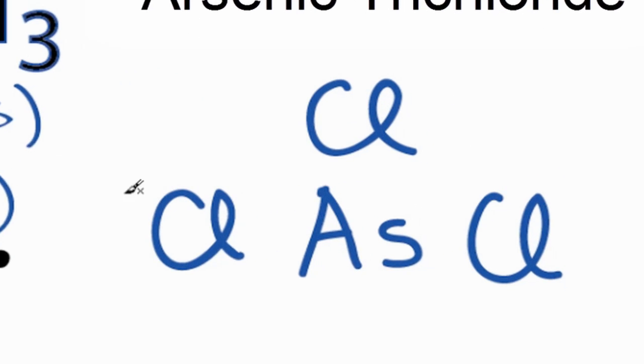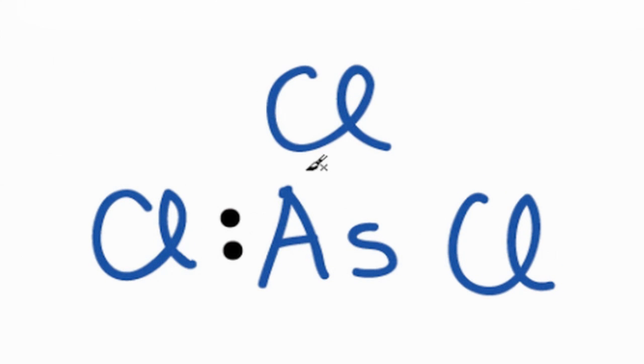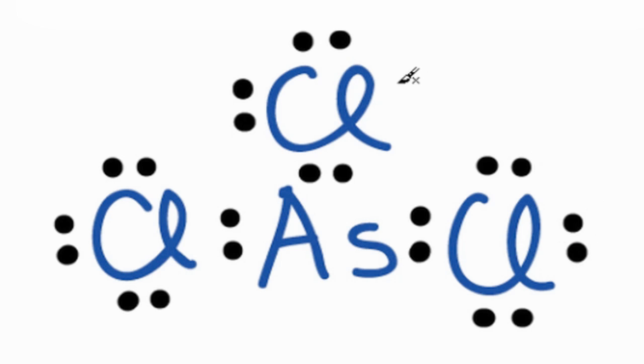We have a total of 26 valence electrons. We'll put 2 between atoms to form chemical bonds. And then we'll go around the outside of the outer atoms to complete their octets. So we have 2, 4, 6, 8, 10, and 24.